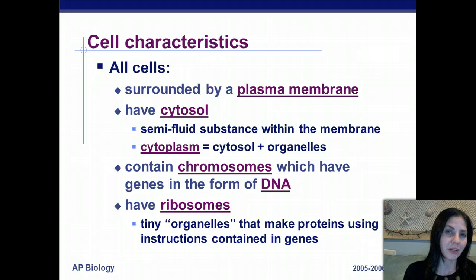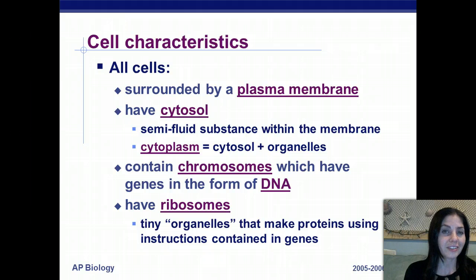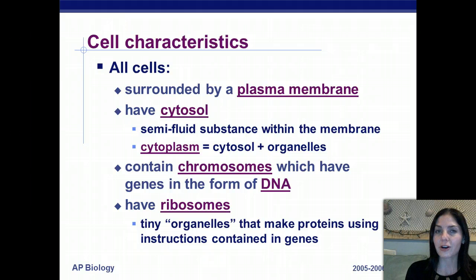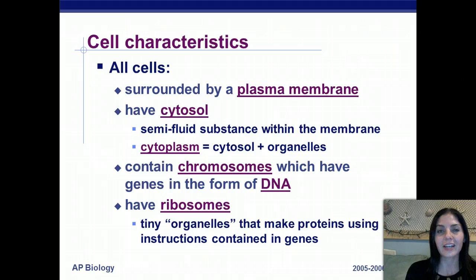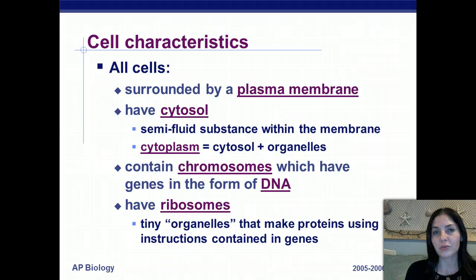In eukaryotic cells, messenger RNA makes a template of the DNA strand in the nucleus, takes it out into the cytoplasm, and brings it to a ribosome where the protein starts to be synthesized.